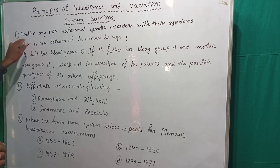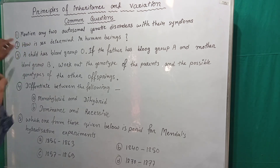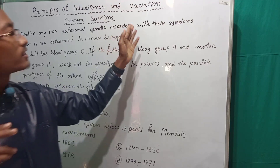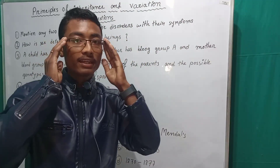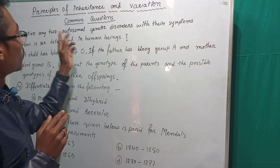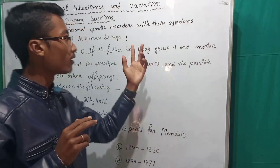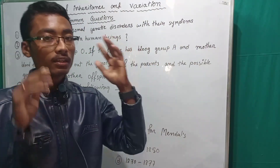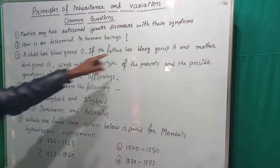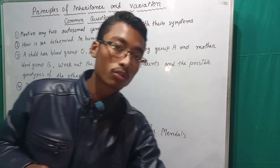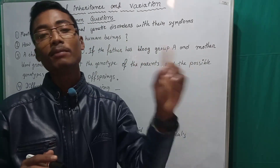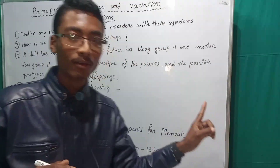Question number one: Mention any two autosomal genetic disorders with their symptoms. This is a most important question — you have a 100% guarantee it will come.